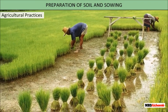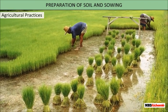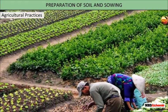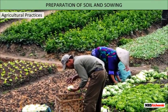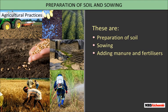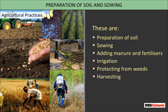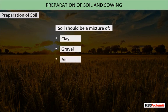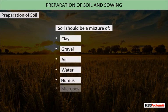Cultivation of crops involves many activities undertaken by farmers over a period of time. These activities are called agricultural practices. These are: preparation of soil, sowing, adding manure and fertilizers, irrigation, protecting from weeds, harvesting, and storage. In order to grow properly, plants need soil that consists of a mixture of clay, gravel, air, water, humus, and microbes.